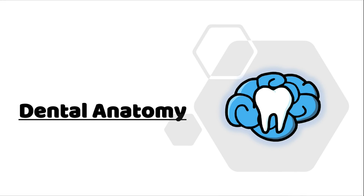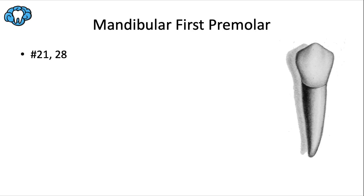Hey everyone, Dr. Ryan here, and welcome back to our dental anatomy series. In this video I'm going to talk about the mandibular first premolar. Here we have a picture from the facial view of the permanent mandibular first premolar, which happens to be the smallest of all the premolars. Using the universal tooth numbering system, this would include tooth number 21 and 28.